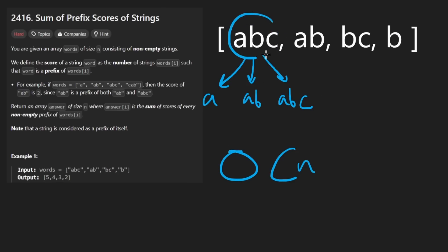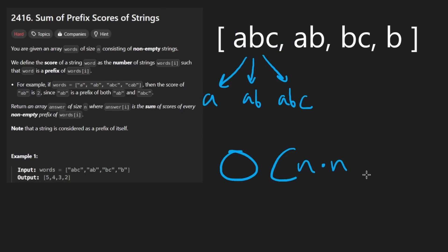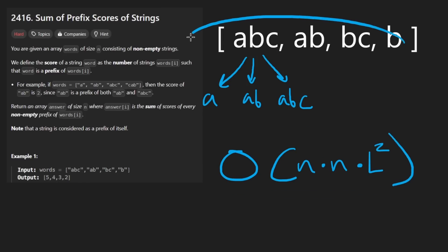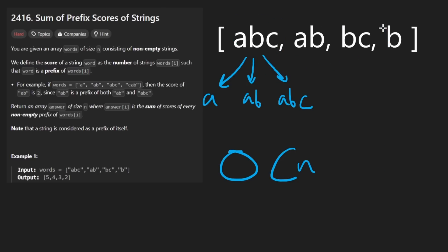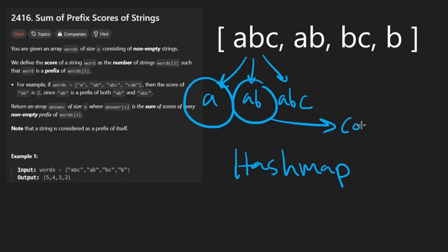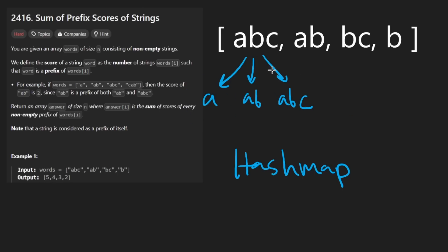For a brute force solution, we'd go through every word — O(N) — then scan through the entire input — another factor of N — then get all prefixes of each word, determined by the word length L, and compare each to other words. The time complexity ends up being roughly N squared times L squared. The obvious optimization: instead of comparing every word to every other word, we do some precomputation — get all prefixes of each word and store them in a HashMap with their counts.